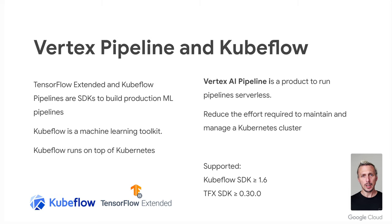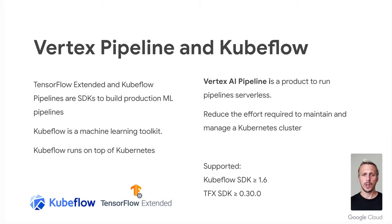Kubeflow is built to run on top of Kubernetes. Running a Kubernetes cluster can be challenging and time-intensive, and that's why Google introduced Vertex AI Pipelines — a product to run pipelines serverless. So there's no need for a self-managed Kubernetes cluster anymore, and your machine learning teams can focus on what they got hired for: machine learning. Little disclaimer: Vertex AI Pipelines, of course, also runs internally on top of Kubernetes, but in a way that ML teams don't need to interact with it.